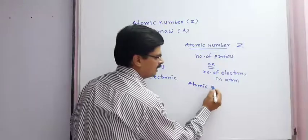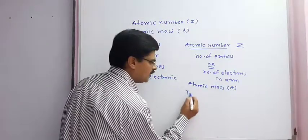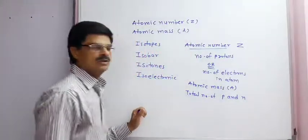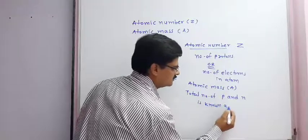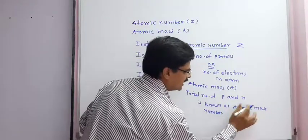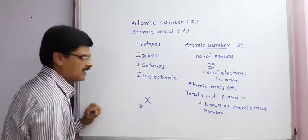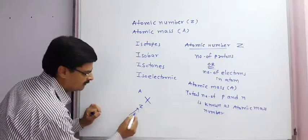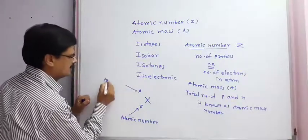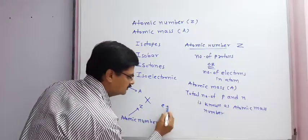Atomic mass number, or simply atomic mass, is denoted by capital A, and that is the total number of protons and neutrons. For any element X, Z is the atomic number written below and A is the atomic mass number written above.